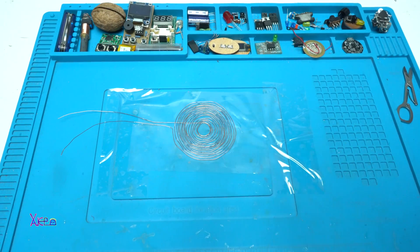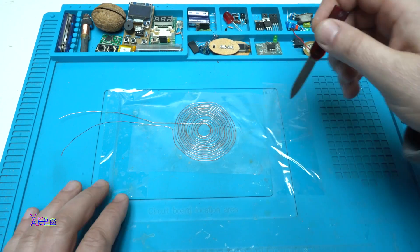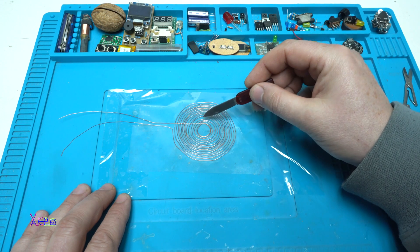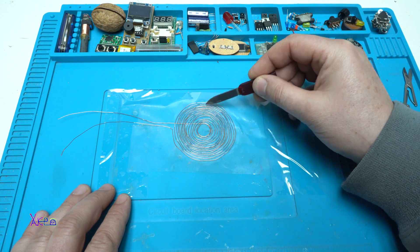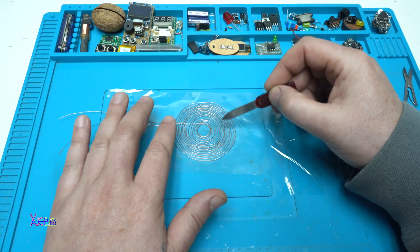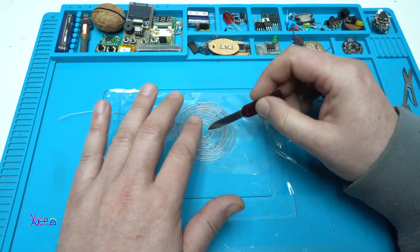And using super glue, I'm going to add some small drops of super glue so I can fix the copper wire in place.